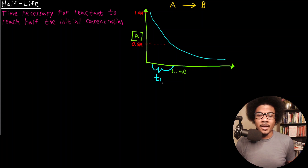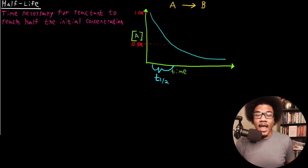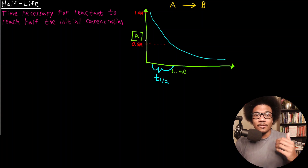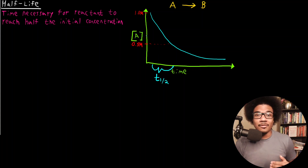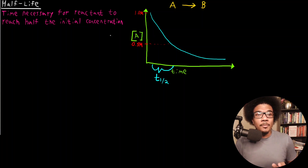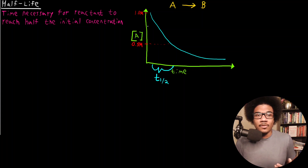To denote the half-life, we use the notation T sub one-half — a subscript one-half — in order to denote the time it takes for the reactant to reach half of its initial concentration. It's a pretty simple concept to state in words and even to visualize graphically.